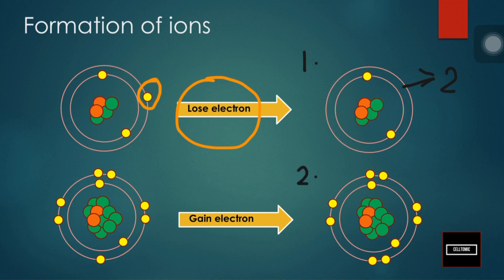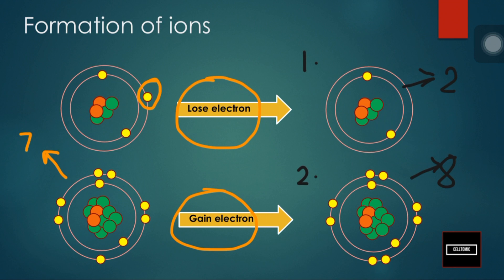Let's look at the second example. For this particular example, we can see that it has a full valence shell of eight electrons. Every shell after the first can hold eight electrons. So since this particular ion has eight electrons in its valence shell, it has a full valence shell. They achieve this by gaining an electron — the outer shell had seven electrons and gained one more to achieve a full valence shell.